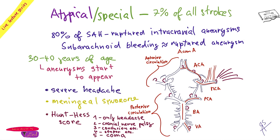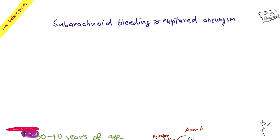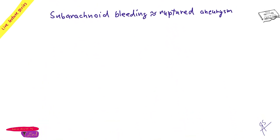Important clinical management point: if someone comes to your office and says 'I never had such a headache and I'm not feeling well,' he could be Hunt-Hess 1. Never, from today, underestimate a severe headache. He might be fine neurologically, but blood is in the subarachnoid space. On CT, you look for blood in the subarachnoid space.